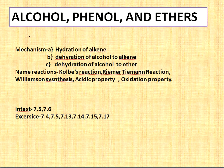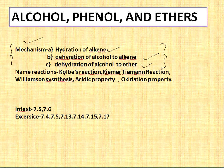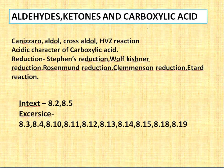The next chapter is Alcohols, Phenols, and Ethers — this is a mechanism-heavy chapter. Topics include hydration of alkene, hydration of alkyne, dehydration of alcohol to alkene, and dehydration of alcohol to ether. These mechanism parts you have to read from NCERT. Name reactions include Kolbe's reaction, Reimer-Tiemann reaction, and Williamson synthesis. Also learn the acidic property of alcohols and phenols, and oxidation properties.